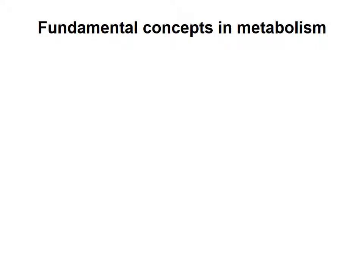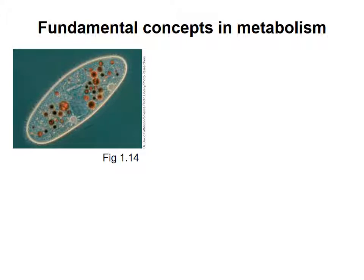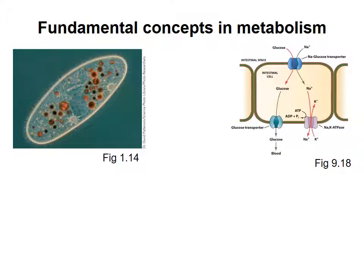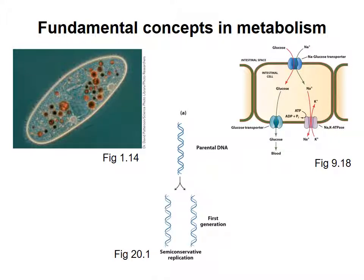Living organisms must carry out a diverse set of tasks, such as building and maintaining physical structures, importing and exporting substances, and passing genetic information on to progeny. At their most basic level, these tasks involve chemical reactions. As we study in detail how organisms perform the tasks required for life, it is important to understand some basic concepts relating to chemical reactions in cells. This module focuses on these essential concepts.